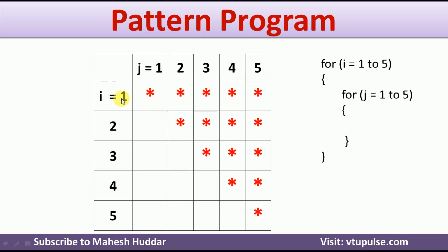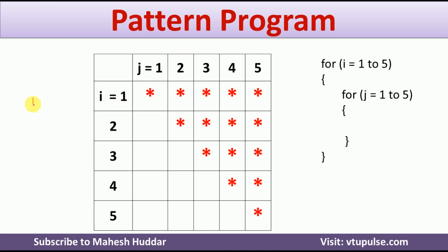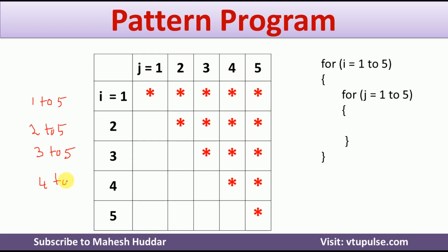So, if we consider i equal to 1, the possible values of j are 1 to 5 and we need to print star for all of them. But when the value of i is equal to 2, I need to print star only from 2 to 5, and at the first place I need to print space. When i is equal to 3, I have to print stars from 3 to 5, and in the remaining places I need to print spaces. Similarly, if it is 4, I need to print from 4 to 5, and in all other places print space. The last case is 5 to 5, where I need to print star.